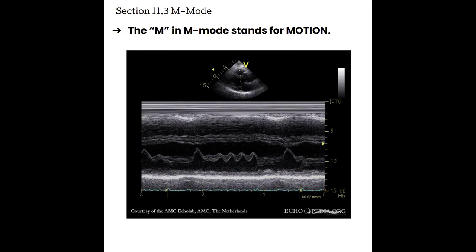M mode uses one scan line. Along that one scan line, it is going to map the motion that is occurring. As a sound beam enters and returns from the body, the machine displays different grays that correspond with the B mode image, and then it does this very rapidly so motion can be detected. The sample rate — how quickly the machine can sample down that one scan line — is equal to the PRF of the system. Depending on what your depth is, is your PRP, and your PRP then determines your PRF.